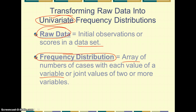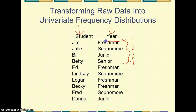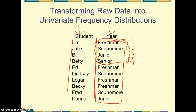Univariate frequency distributions — univariate simply means one variable. For example, we could have a data set with the names of students and their year in high school. Jim is a freshman, Julie is a sophomore, Bill is a junior, Betty is a senior. In the American system, freshman is first year, sophomore is second year, junior is third year, and senior is fourth year. So we have nominal data on their year in high school.